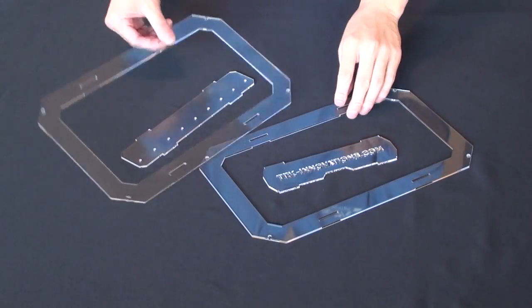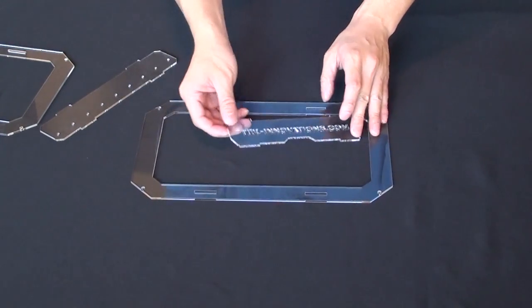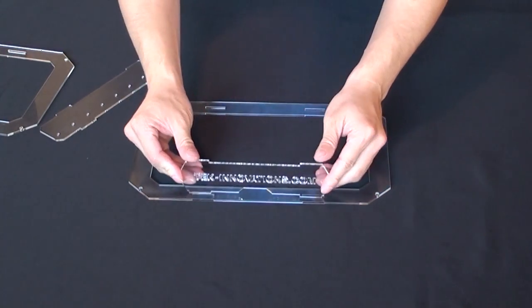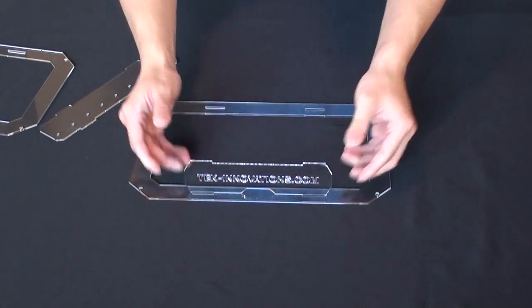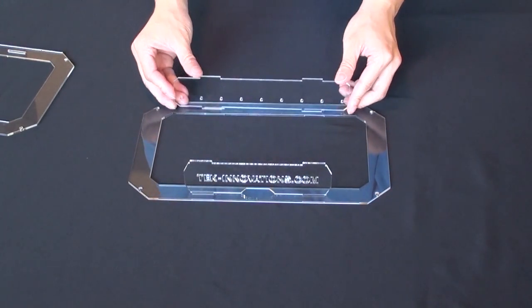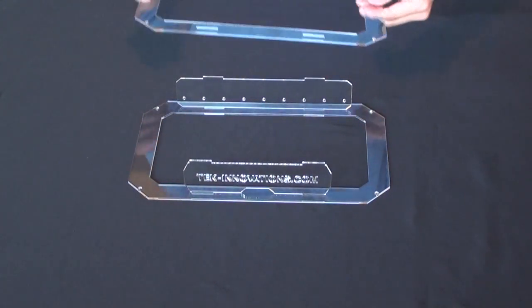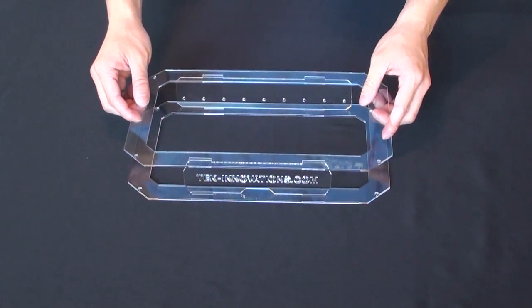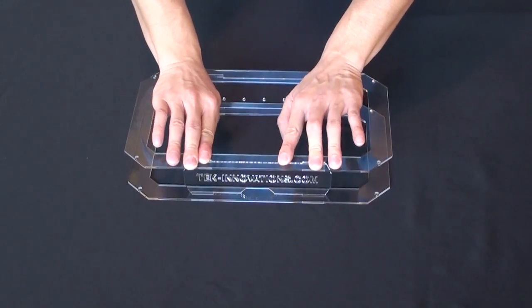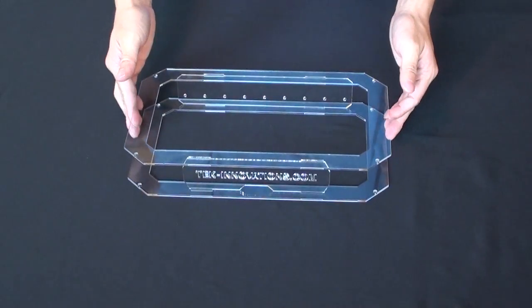We'll start with the border pieces, the nameplate and the PCB plate. Snap the nameplate to one side of the border. Then, snap the PCB plate to the other. Now, snap on the other border. At this point, you already have the skeletal structure of the case.